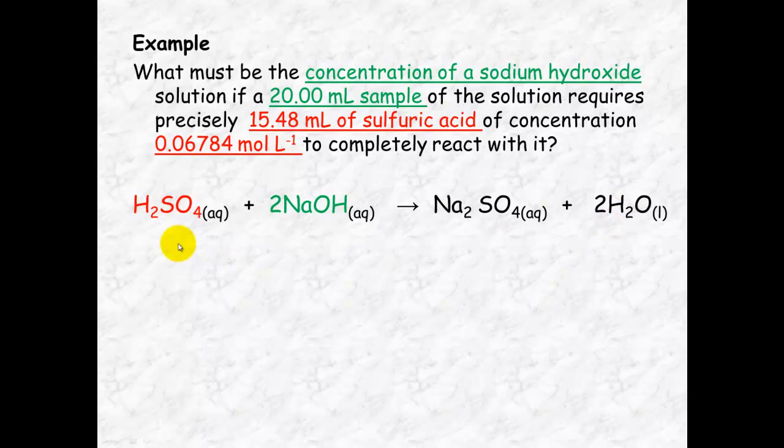Once that's done, we put the information that we know from the question. So volume of sulfuric acid is 15.48 ml. Very important that you change this into litres. That's one of the biggest places where people make mistakes. Volume must be in litres. The concentration is 0.06784 molar. So pop that in directly underneath so you know that it relates to the sulfuric acid.